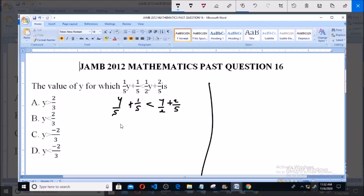When we collect like terms we'll have y over 5 minus y over 2 is less than 2 over 5 minus 1 over 5.